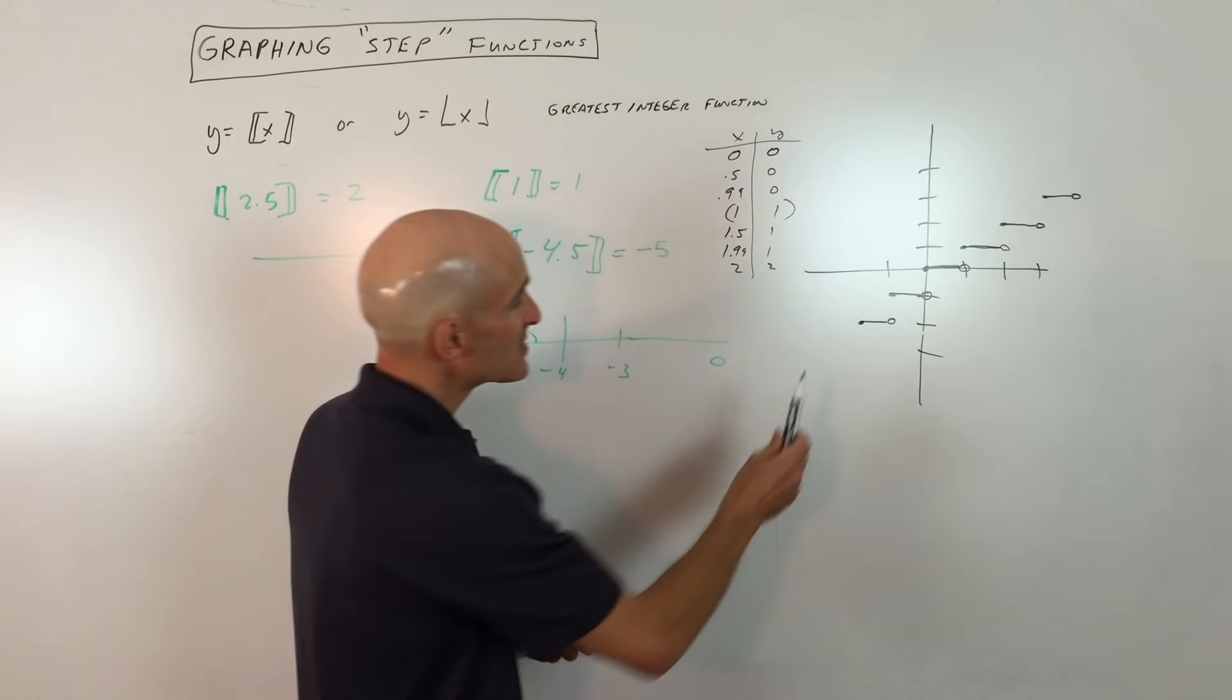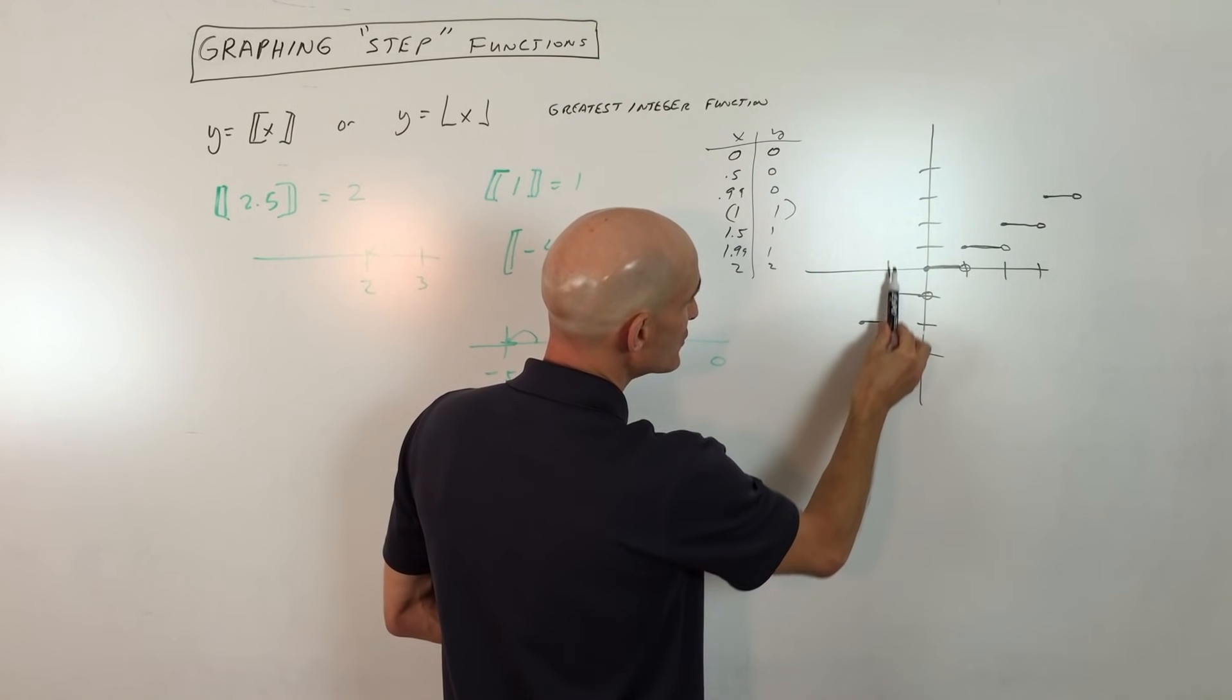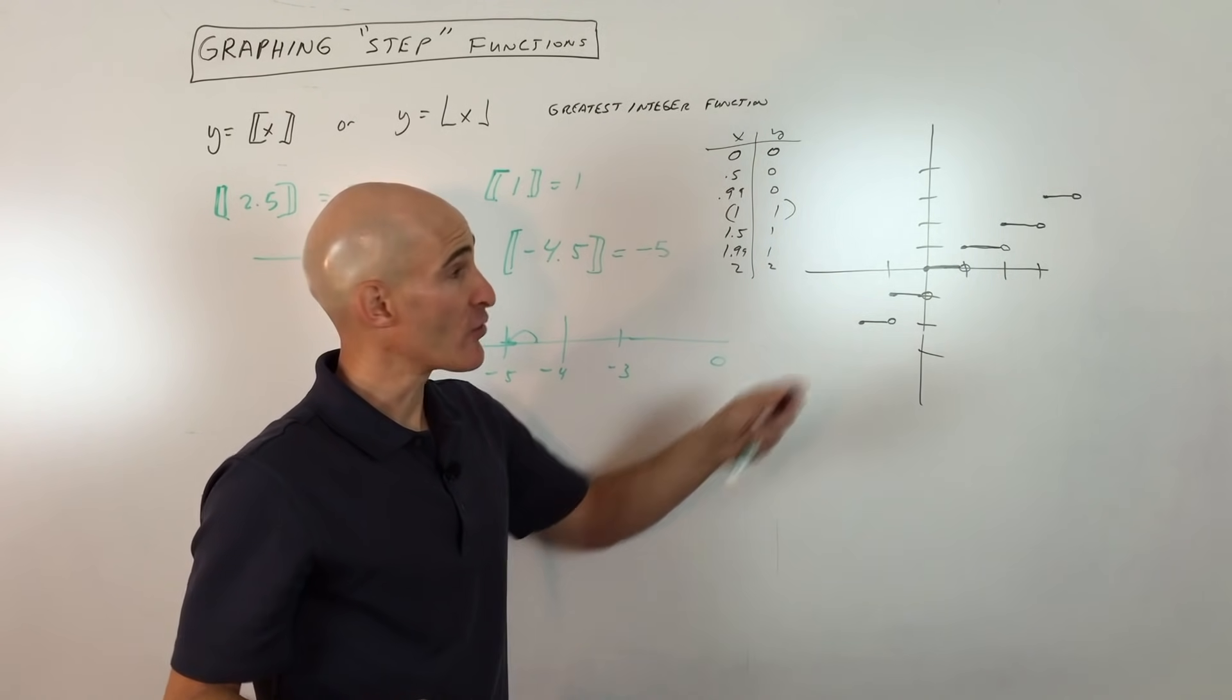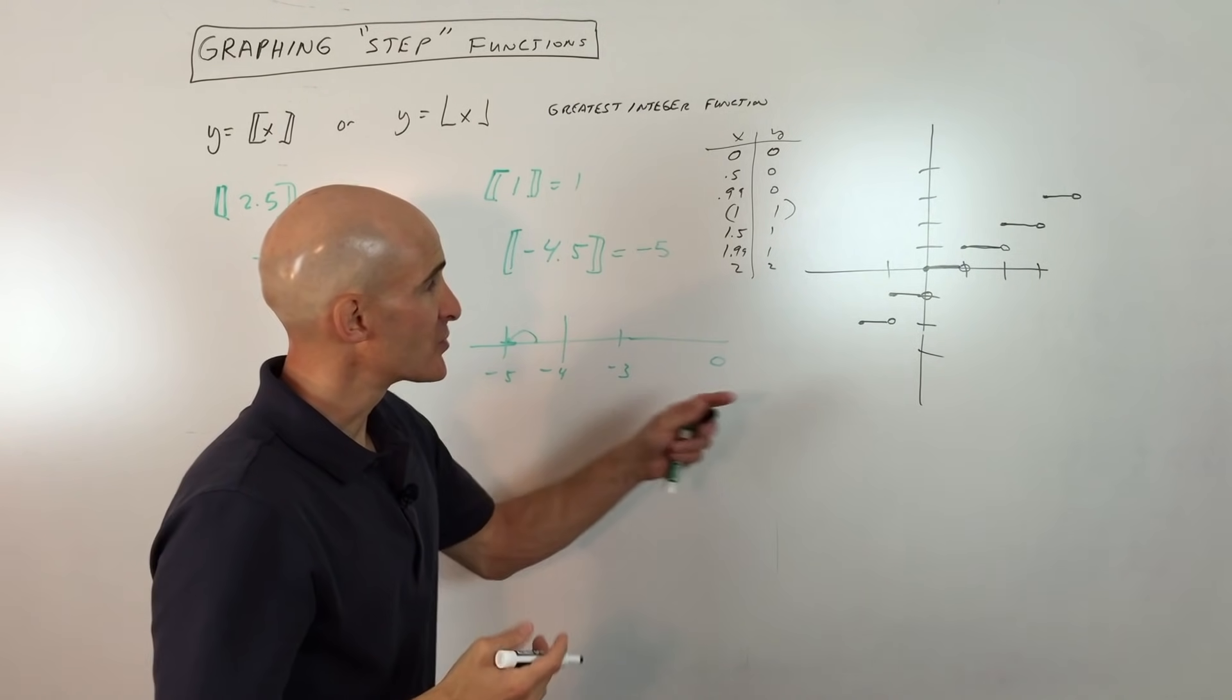Now this is a function because it passes the vertical line test. Notice like right here it's open here, closed here, so it's only crossing the graph at one point. So this is how you graph the basic graph.